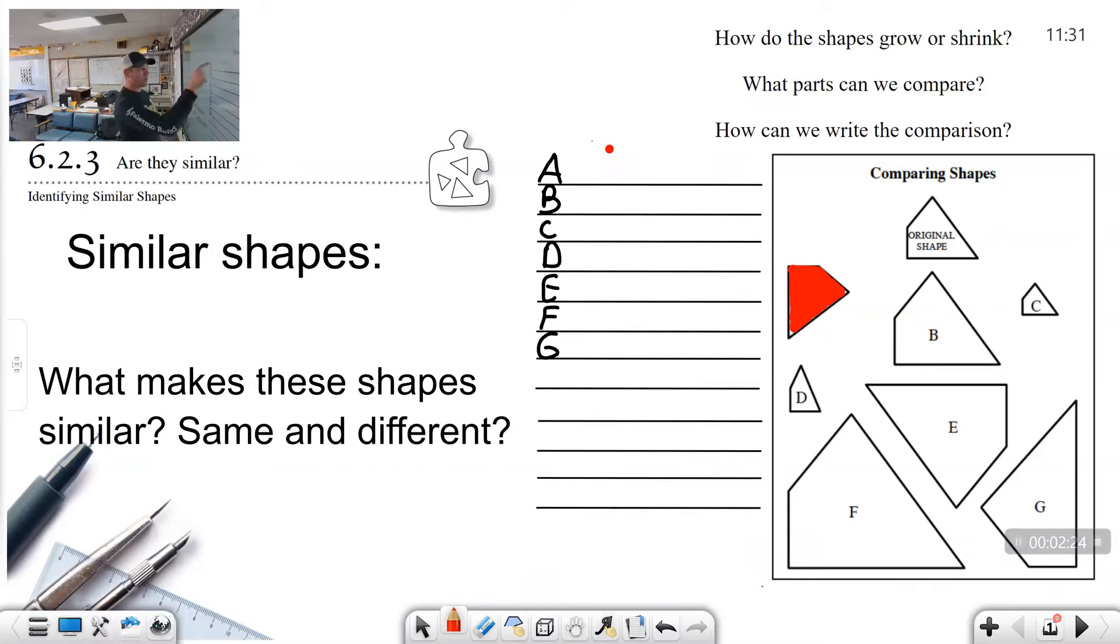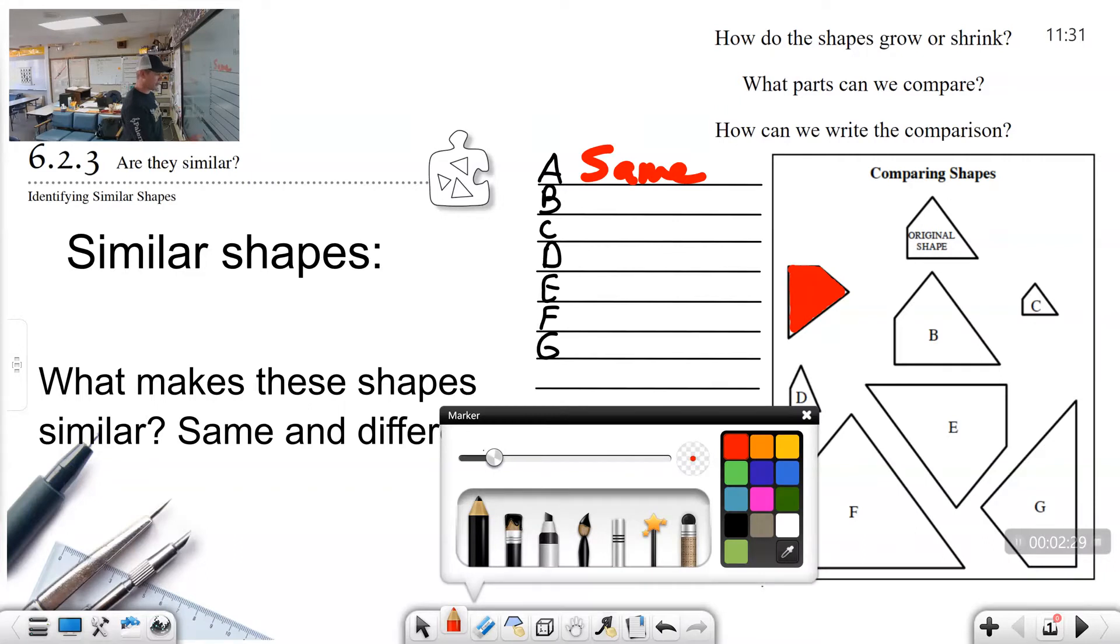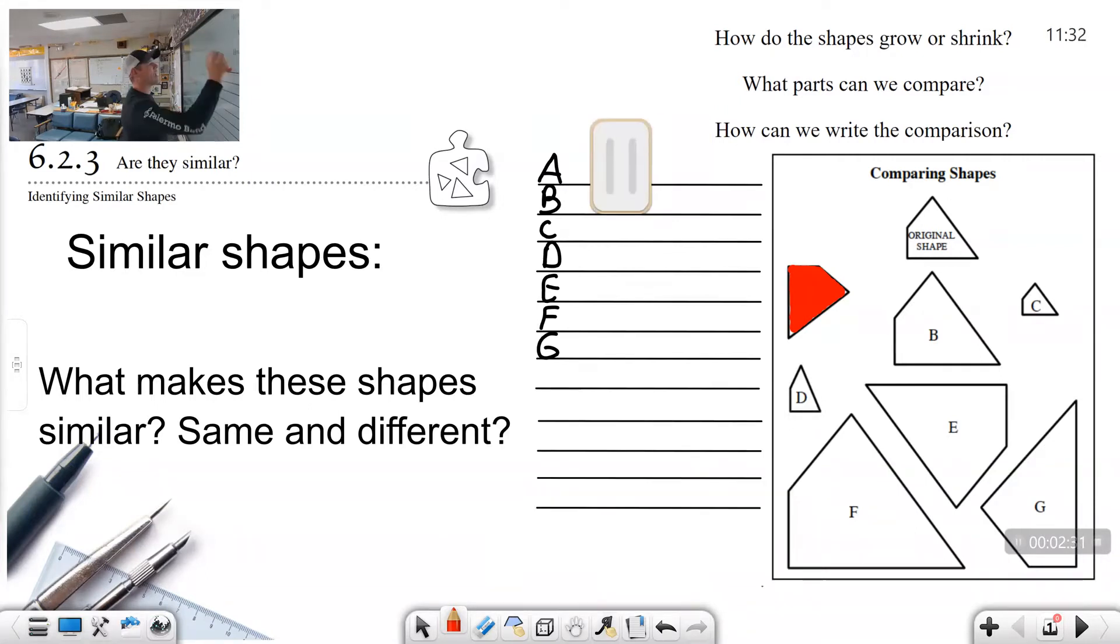What word could we write next to letter A? Well, to me, they're the same. They look the same to me. They look like they are the same size. It's important that we notice the same size here. Same angles. Notice that the lines are parallel. They're actually identical. So that's something that I could notice in shape A.